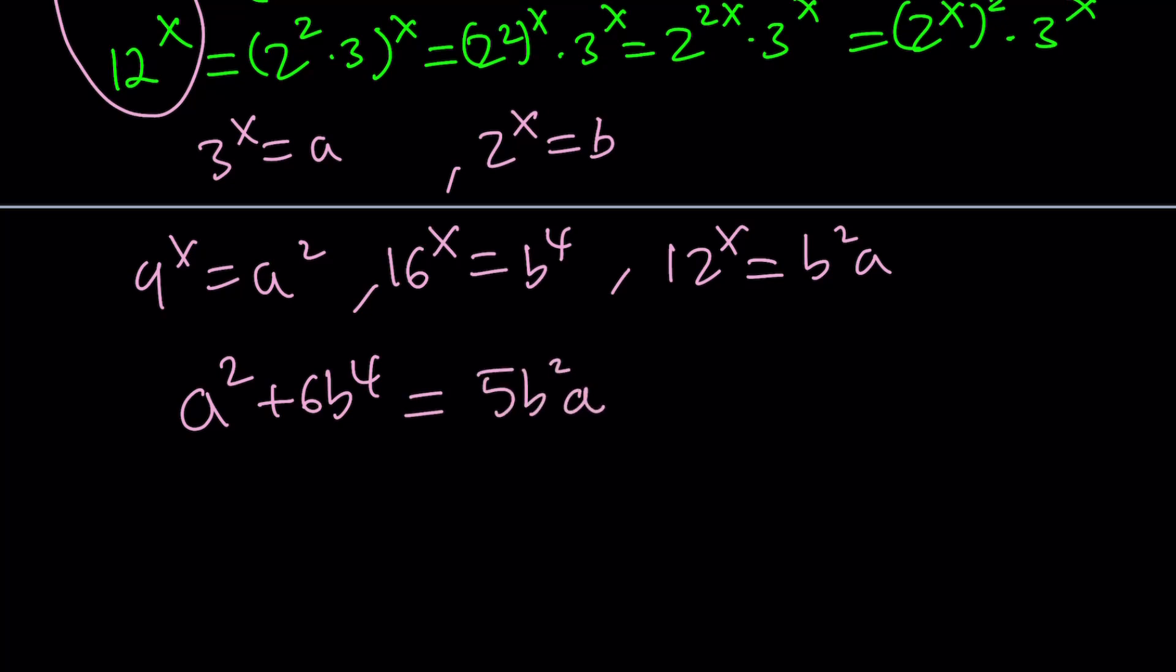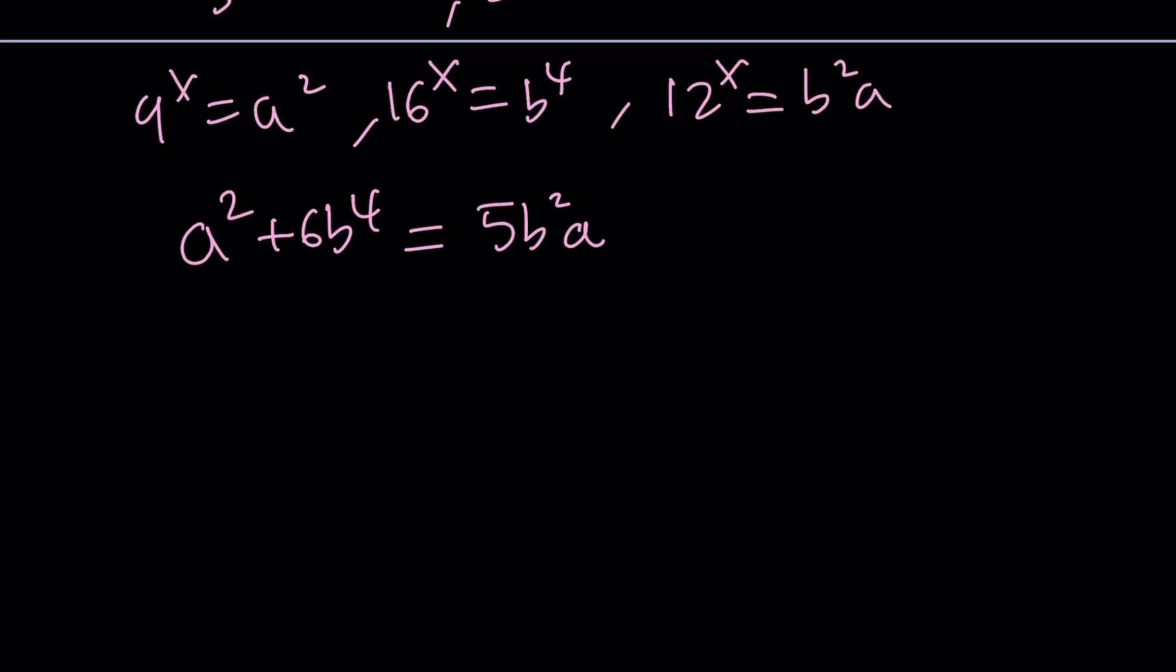1, 6 and 5. Does that ring a bell? Maybe 1 plus 5 equals 6. Let's try different ways to factor this. I want to write this as a squared minus 5b squared a plus 6b to the 4th equals 0.